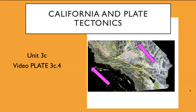For better or for worse, you happen to live in a state with a very, very complicated plate boundary. California is located between the Pacific and North American plates, and the plate boundary changes quite a bit as you go from north to south. We're going to take a look at the current plate boundary along western North America, as well as how this plate boundary came to be.